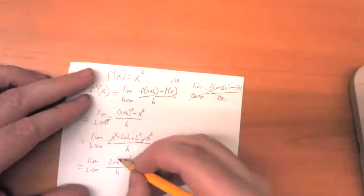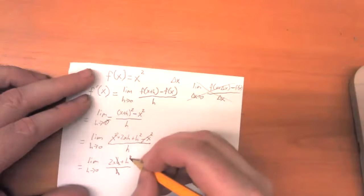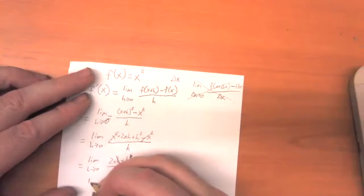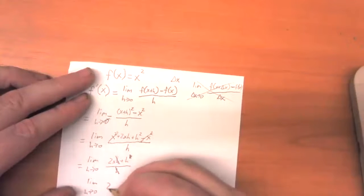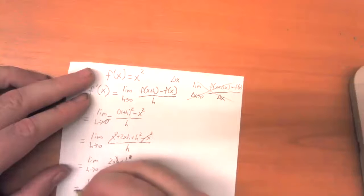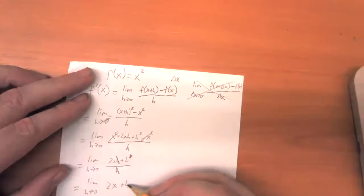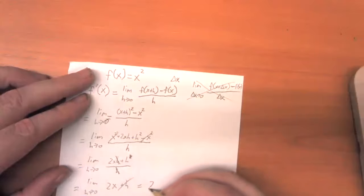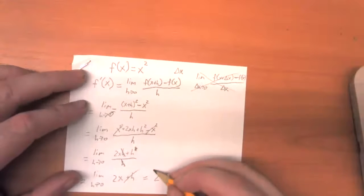And once again, like before, we're going to have some nice canceling out that happens. So this is the limit as h approaches zero of 2x plus h. And as h approaches zero, that term, this term goes away. And so our answer is just 2x.